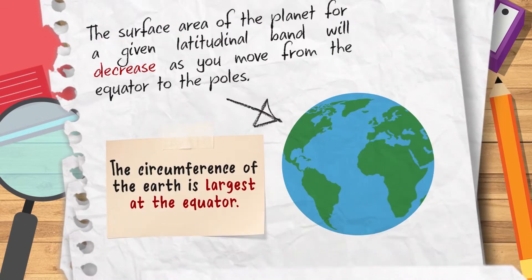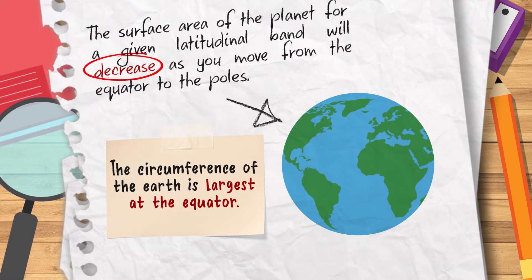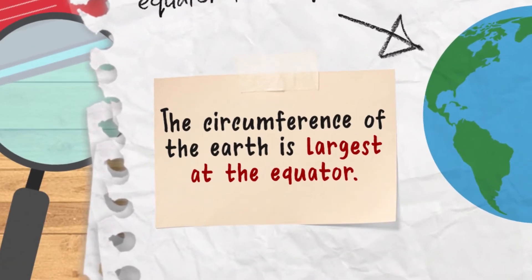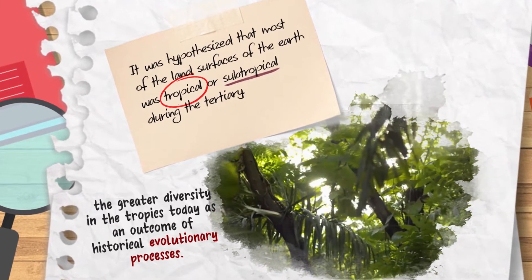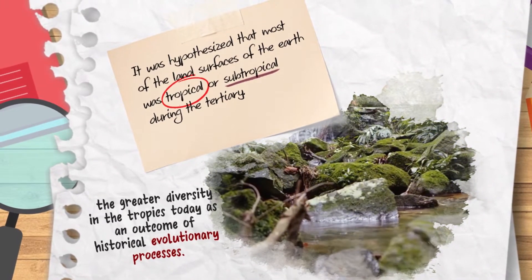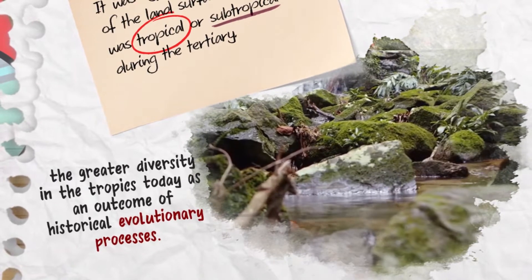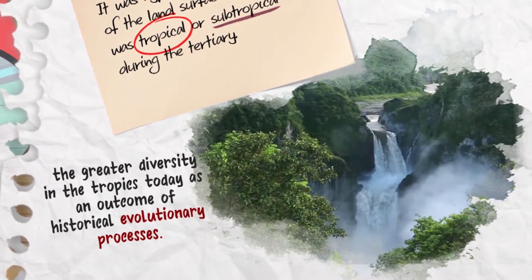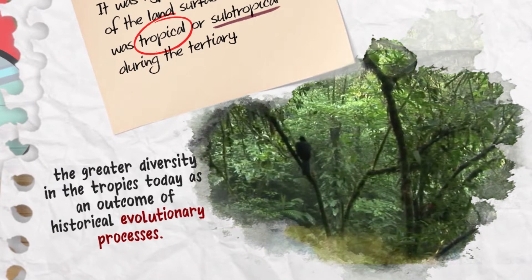Being spherical, the surface area of the planet for a given latitudinal band will decrease as you move from the equator to the poles. The circumference of the Earth is largest at the equator. It was hypothesized that most of the land surfaces of the Earth were tropical or subtropical during the Tertiary, which could partly explain the greater diversity in the tropics today as an outcome of historical evolutionary processes.